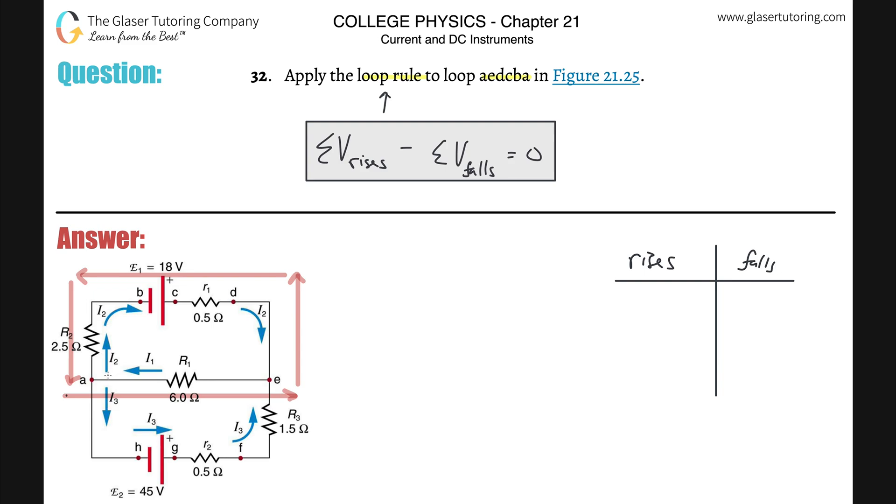Whenever the direction in which you're analyzing the circuit, in this case we're going from left to right, is in opposition to the direction of the stated current, I1 here, that indicates a potential rise. So if you're analyzing it from left to right and the current's flowing from right to left across a resistor, that will represent a potential rise.